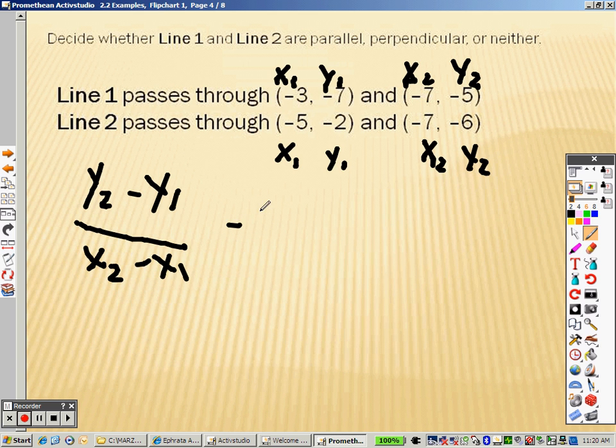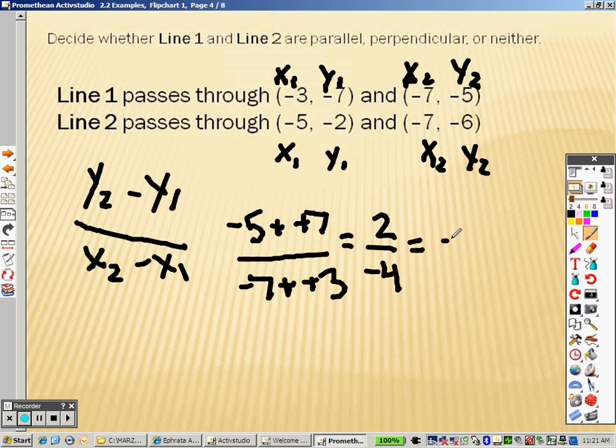So let's plug in the first one. y2 minus y1 over x2, which is negative 7, minus negative 3, so plus positive. That gives me a 2, plus a positive. That gives me negative 4, which simplifies to negative 1 half. So here's the slope of the first one.